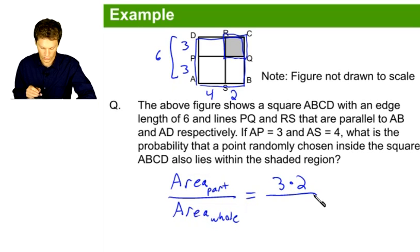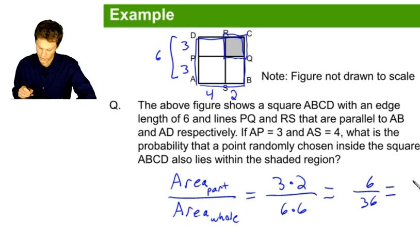And of course, the area of the whole will just be the area of the larger square, which is 6 times 6. And that will give us 6 over 36. The probability, when we simplify it, comes to 1 over 6.